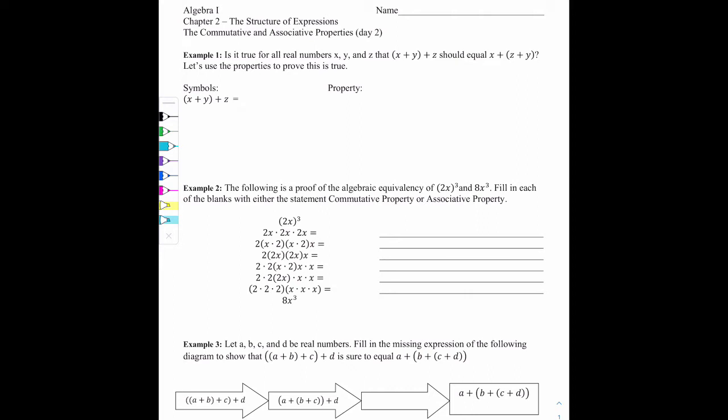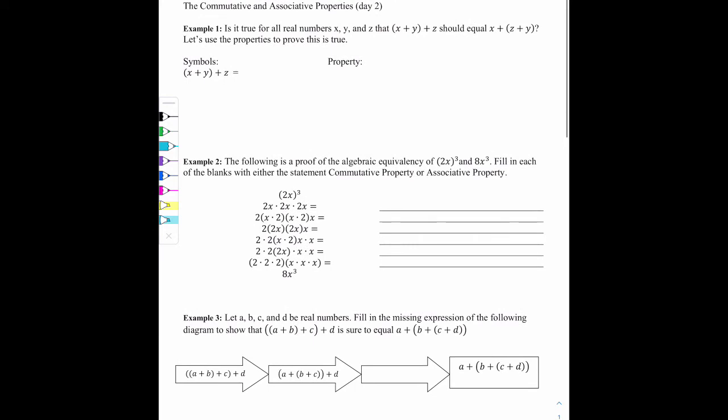So in example 1, is it true for all real numbers x, y, and z that (x+y)+z should equal x+(z+y) in parentheses? Let's use the properties to prove this is true. Whatever they tell you you are starting with is your starting point. And then whatever they're asking you to have it equal is your ending point.